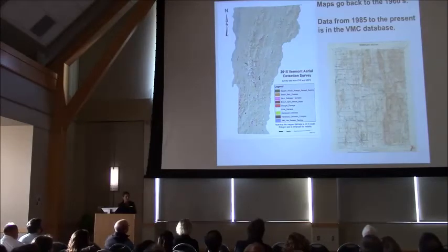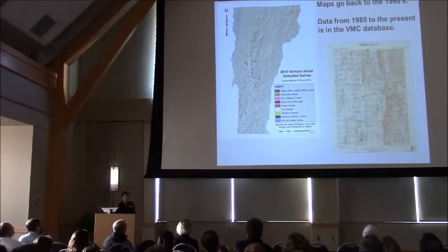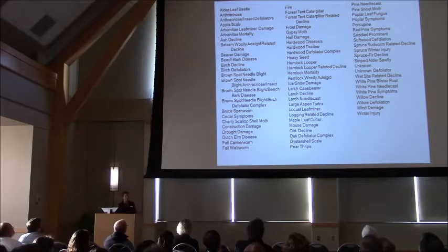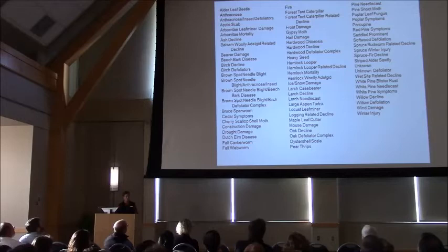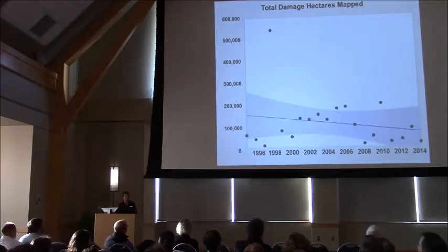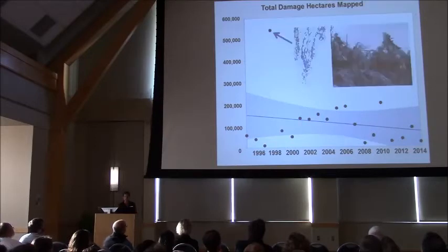We have maps that go back to the 1960s. The data since 1985 is archived in the VMC database. I'm going to be talking about just the last 20 years. Over the last 20 years, we've recorded dozens of different kinds of forest damage, but if we threw them all together and looked at from year to year, how much damage did we map every year, you notice that it goes up and down a little bit, but it's pretty in the same range except for one outlier, and that was 1998 when we had the ice storm.